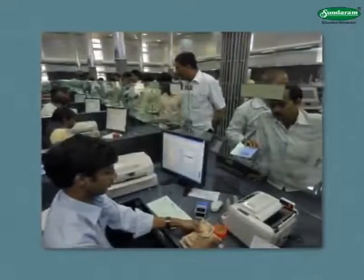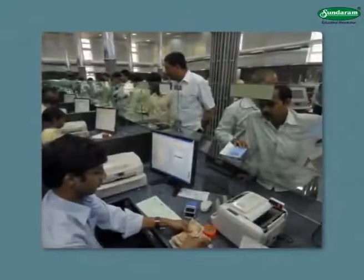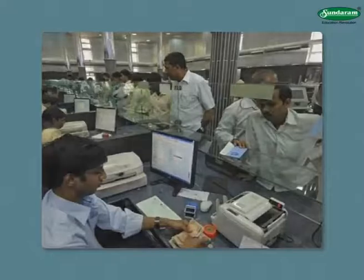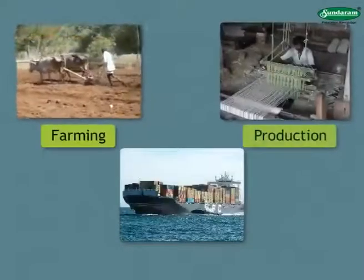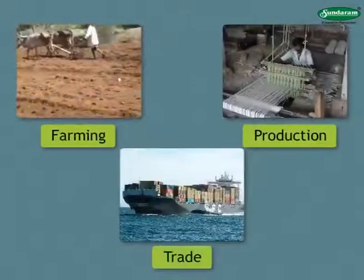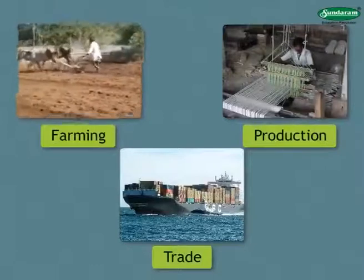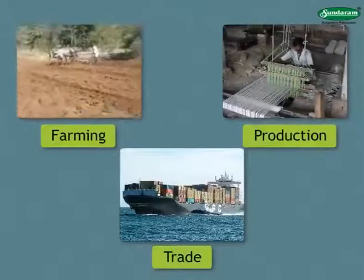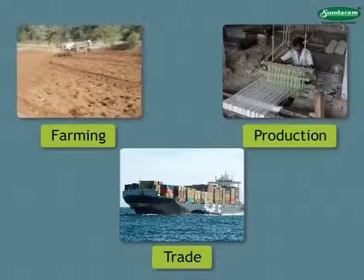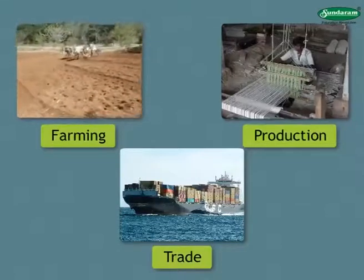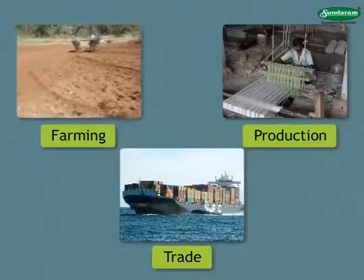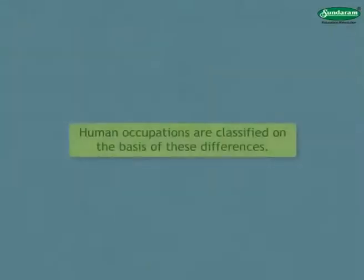Institutes like banks make available and manage the money required for or obtained through activities like farming, production or trade. You must have now realized the differences in the different activities described here. Activities such as farming, production or trade are called occupations.